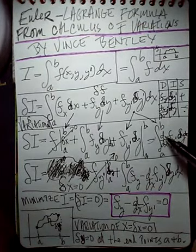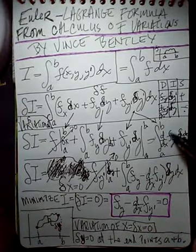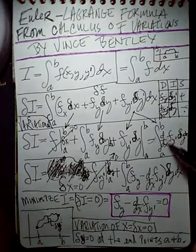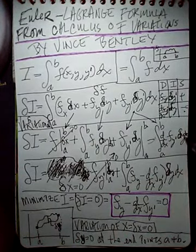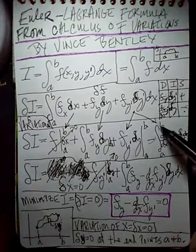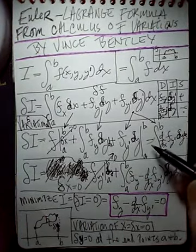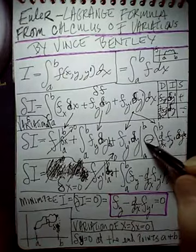So this is d dx, a derivative of this fy prime with respect to x, the variational of y, and dx, the integral of from a to b. And this is a negative sign right here.